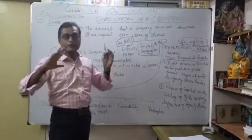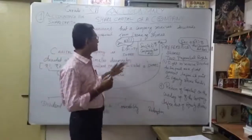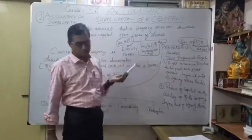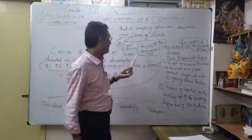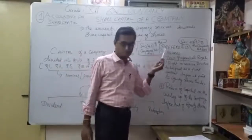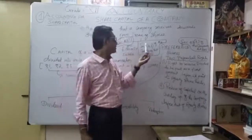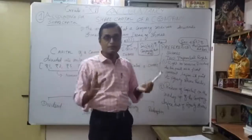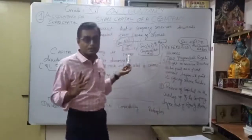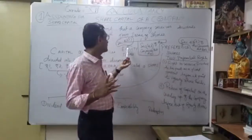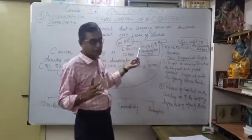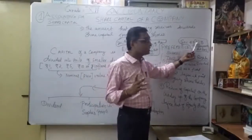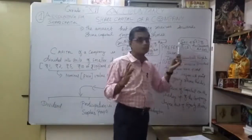There are two types of shares under Section 43 of the Companies Act. One is equity share, under Section 43, Sub-section (a). Another is preference share, under Section 43, Sub-section (b) of the Companies Act 2013. The amount that the company receives towards share capital from issue of shares is the share capital.